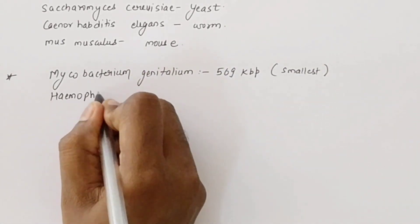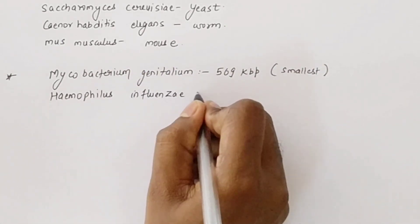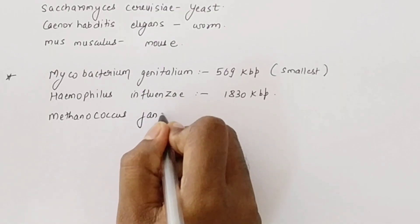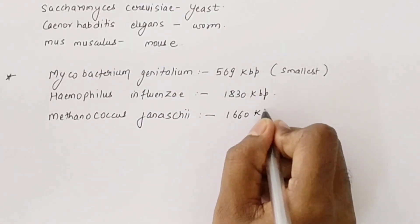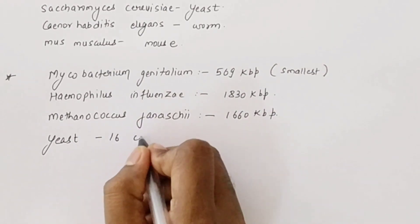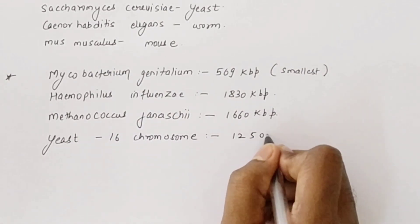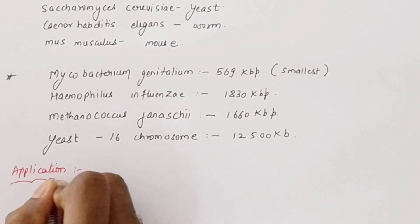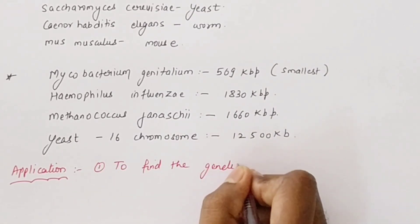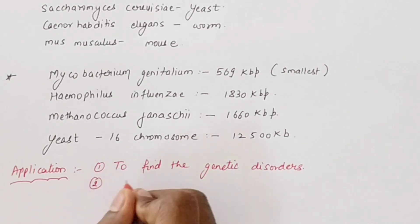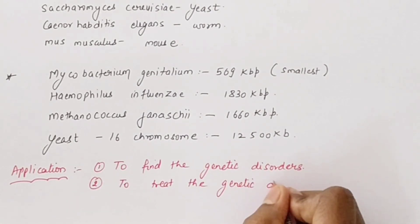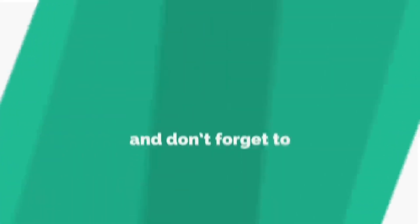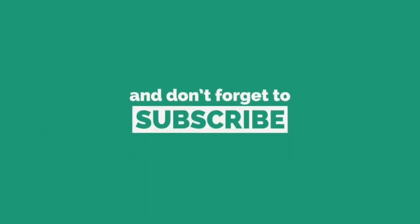For comparison, the smallest genomes sequenced include Haemophilus influenzae with 1830 kilobase pairs, Methanococcus jannaschii with 1660 kilobase pairs, and yeast with 16 chromosomes and a genome of 12,500 kilobase pairs. This shows how detailed the Human Genome Project was. Its applications include identifying genetic disorders and treating them using gene therapy techniques.